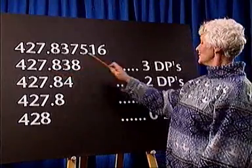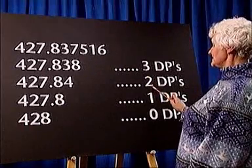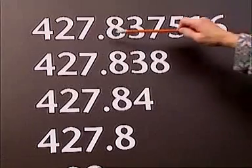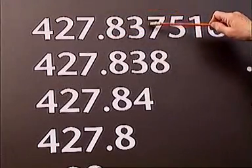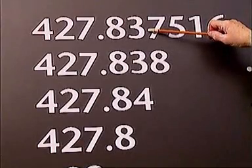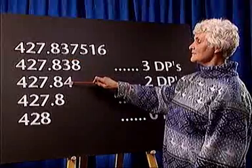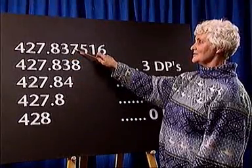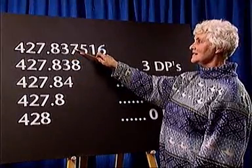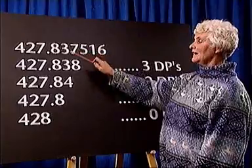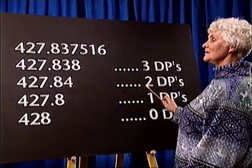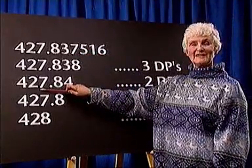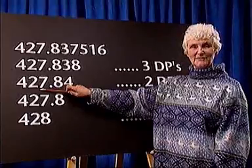Suppose we want to approximate the same number to two decimal places. We count two places from the decimal point. Three becomes four because the first digit to be discarded is more than five. Our answer to two decimal places is 427.84.